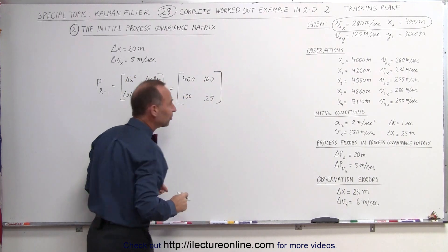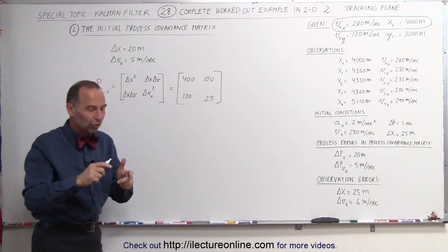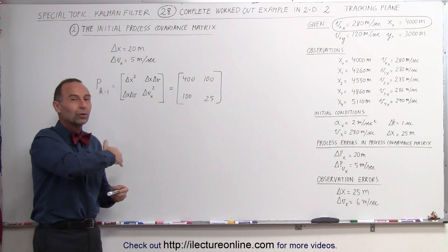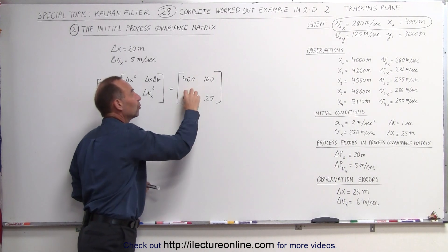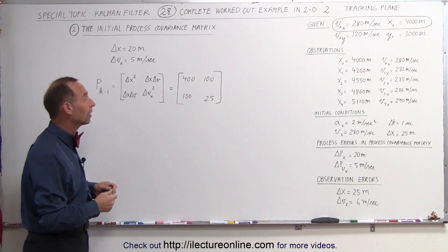Now what often happens, especially when you want to simplify, is that quite often we don't need the cross terms. If there's no specific relationship between the uncertainty or the error in the position and the error in the velocity, we could set these terms equal to zero. We often do that when tracking airplanes or satellites.